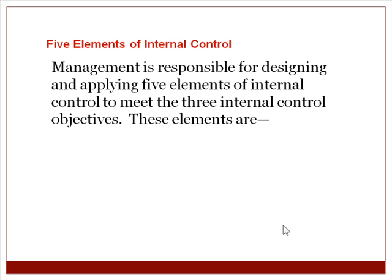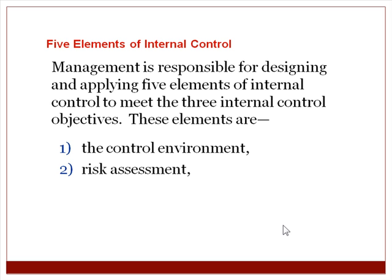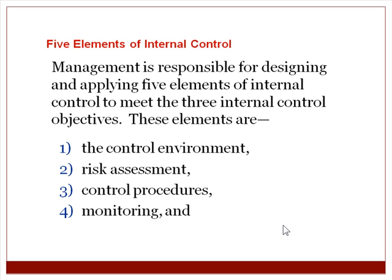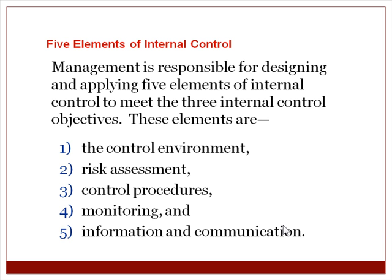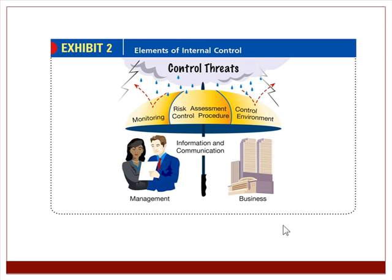Management is responsible for designing and applying five elements of internal control to meet the three internal control objectives. The five elements are: the control environment, risk assessment, control procedures, monitoring, and information and communication. There's a visual showing how control threats encompass monitoring, risk assessment, control procedures, and the control environment, all supported by information and communication to protect the management and business.